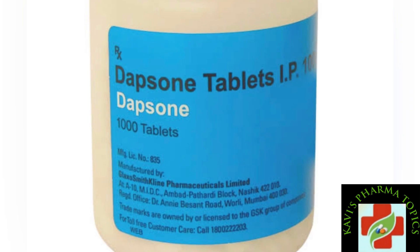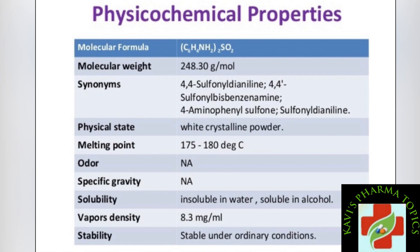The physicochemical properties of dapsone include: molecular weight, synonyms, and physical state — it is a white crystalline powder. Its melting point is defined, and regarding solubility, dapsone is insoluble in water but soluble in alcohol. It is stable under ordinary conditions.